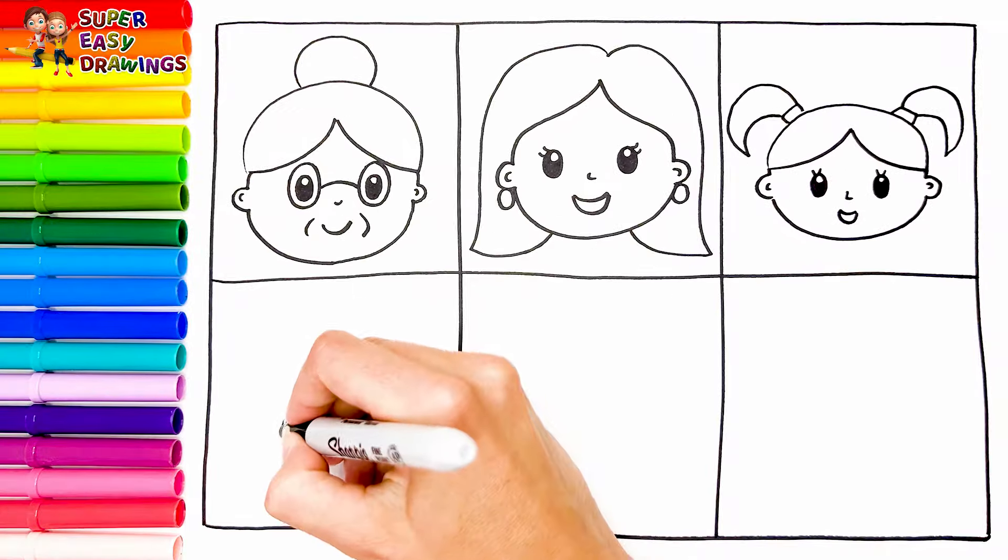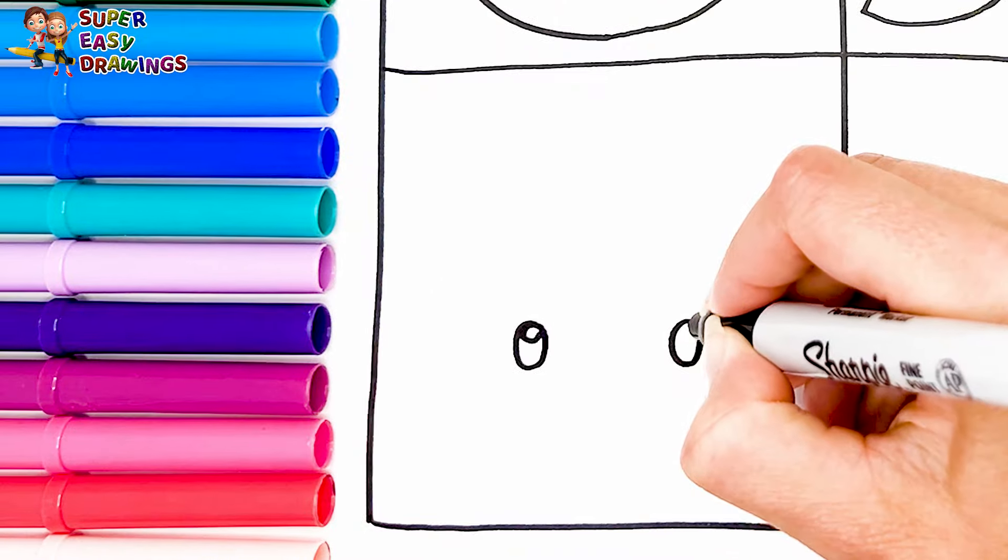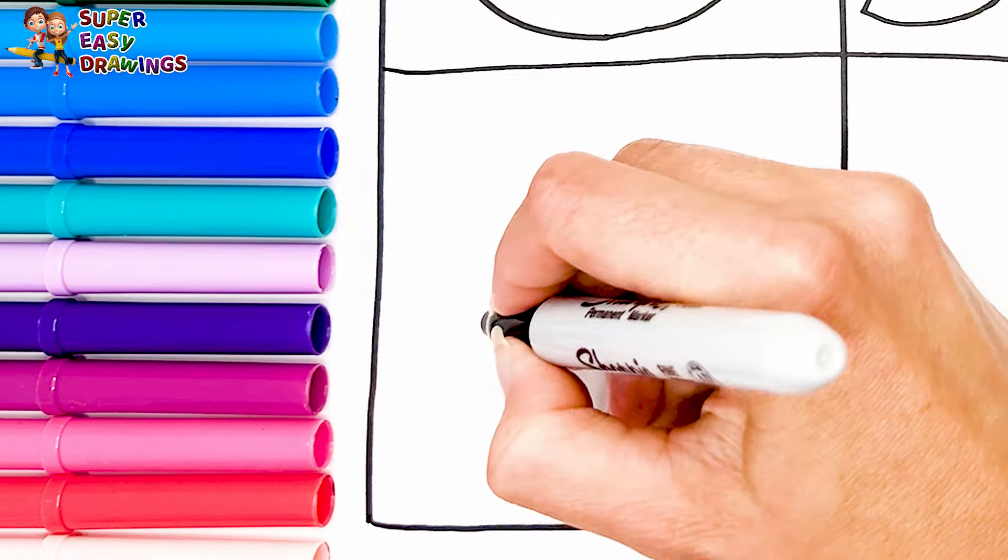In the next row I draw the male members of this family. I start with the grandfather.